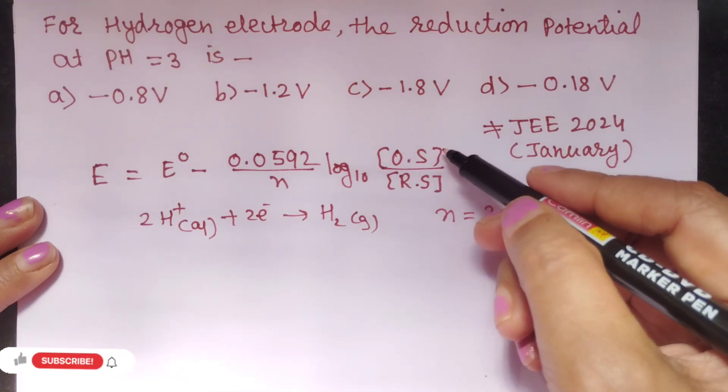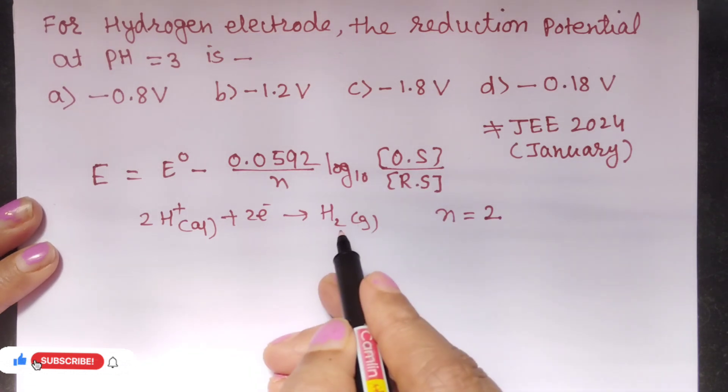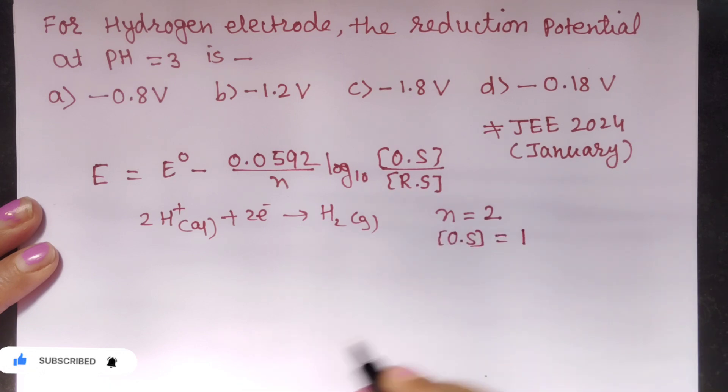Second thing what I need is the oxidized and the reduced state. From the equation you can see there is no oxidized state as there is no ionic concentration on the product side. Therefore concentration of oxidized state is 1.